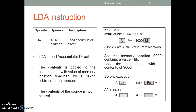LDA: load accumulator direct. The content is copied to the accumulator with the value of the memory location specified by a 16-bit address. The content of the source is not altered. Example: instruction LDA 9000 copies into A the value from memory. Assume memory location 9000 contains F8. Before execution, A contains an arbitrary number. After execution, the content F8 is copied to A.